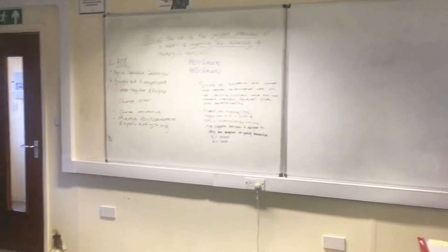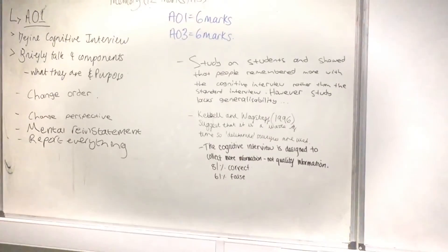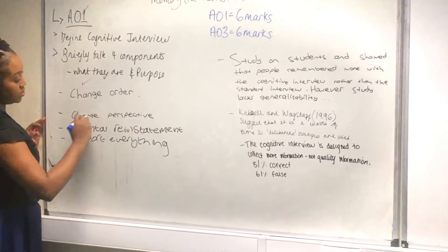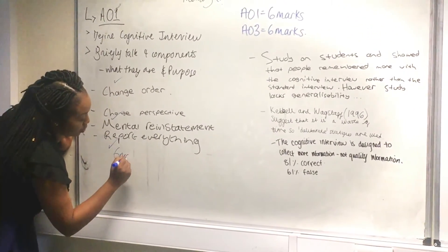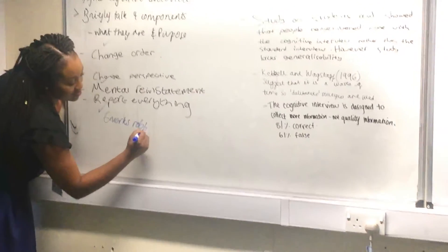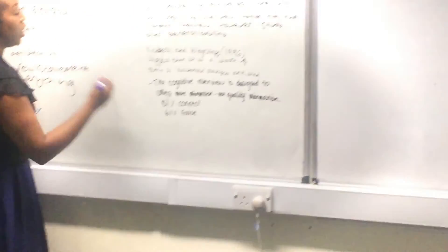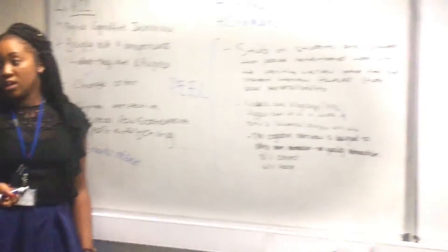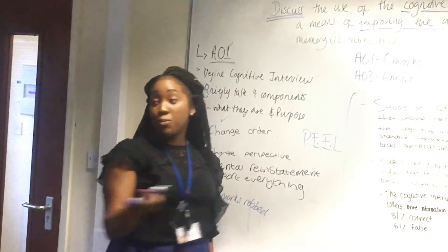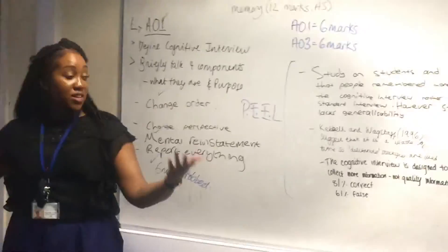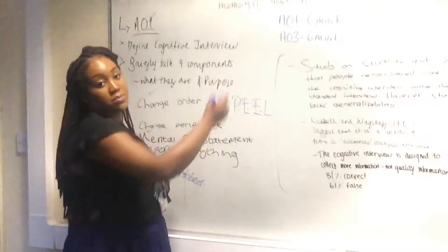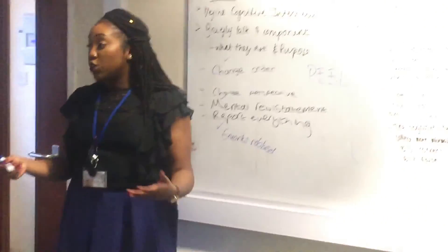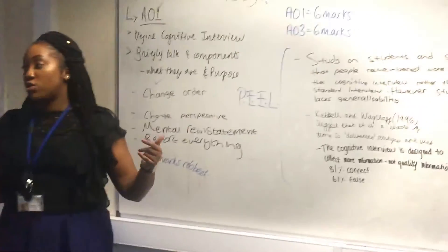So that's your essay planned. As an examiner, if you expand on these points, you get the marks. Six marks for AO1, six marks for AO3. Remember PEEL: you've made your point, given evidence, elaborated, and linked it back to the question. That way, you have robbed the examiner of all 12 marks and you're on your way to an A-star.